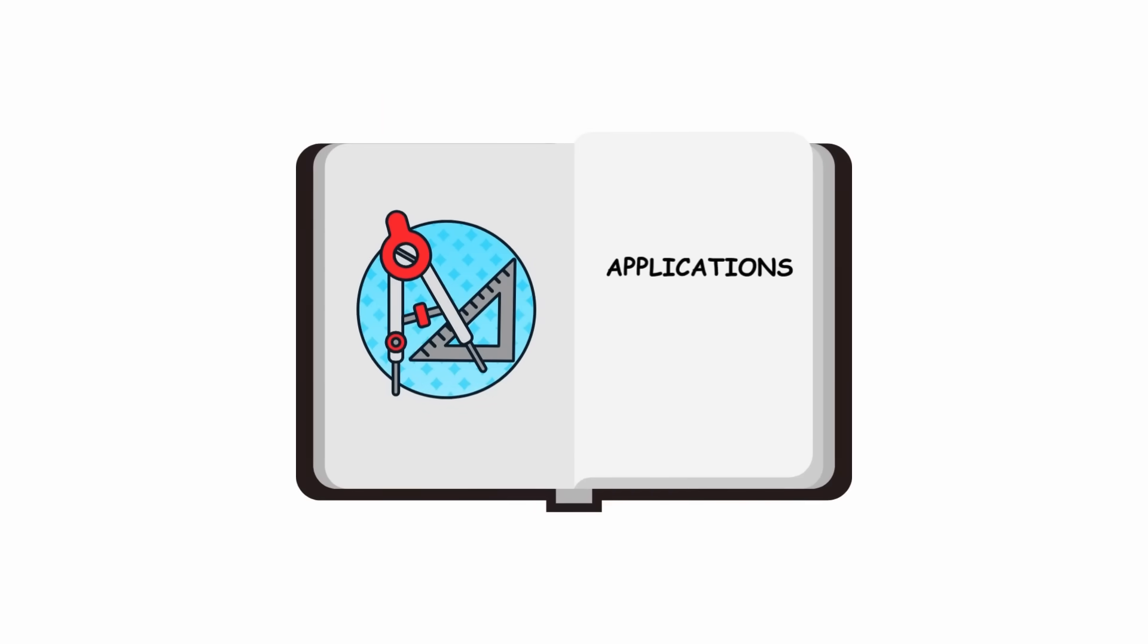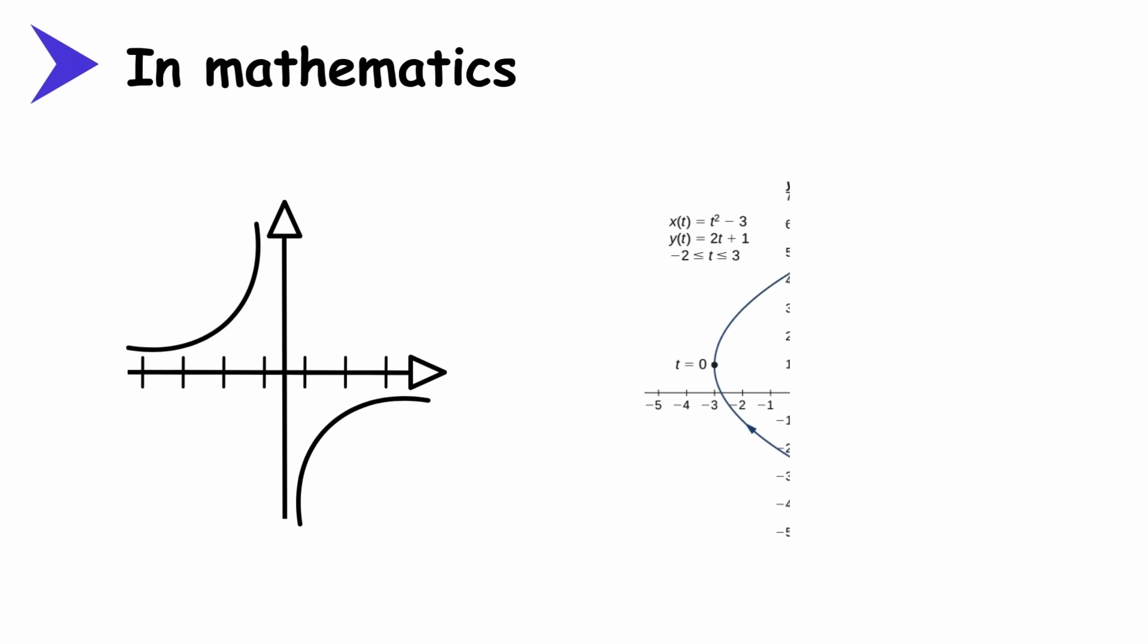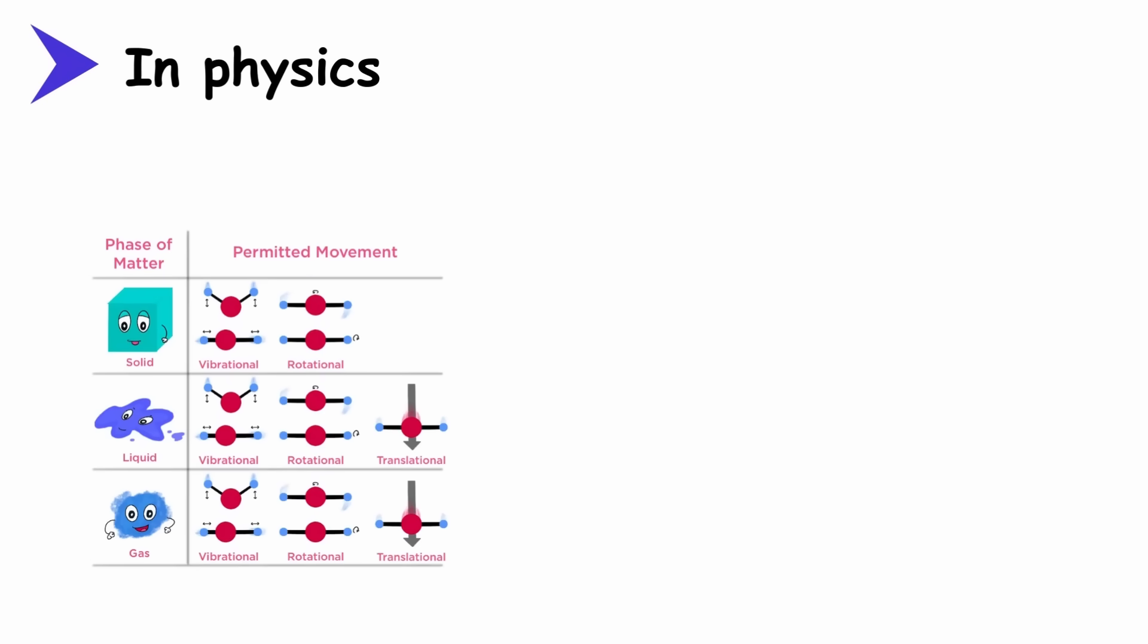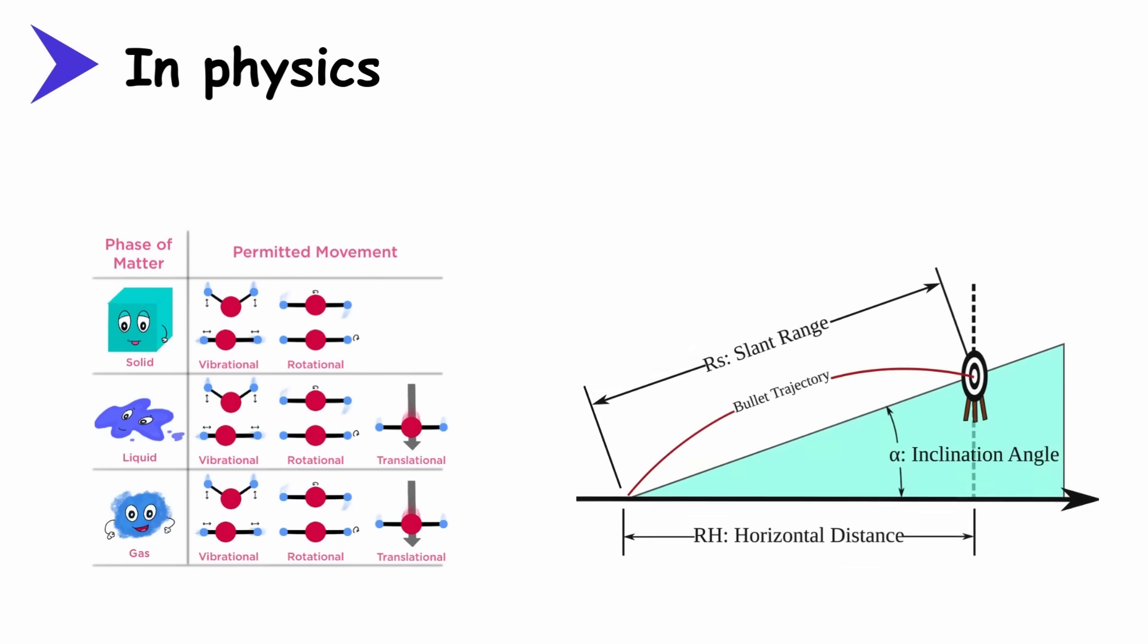We can mention some of the many applications of Cartesian coordinates. In mathematics, Cartesian coordinates are the basis for analytical geometry, allowing lines, curves, and figures to be represented by equations. In physics, they are used to describe the movement of particles, forces, and trajectories.